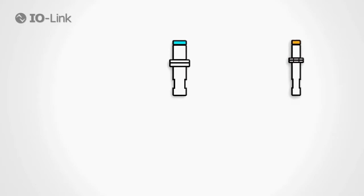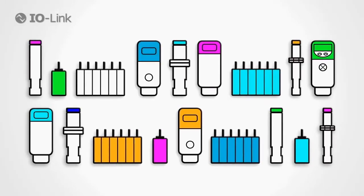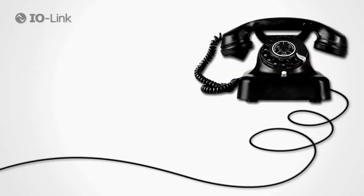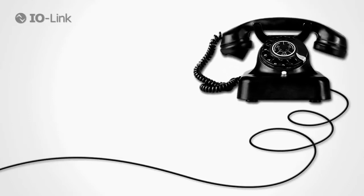You're wondering what IO-Link is, what it can do, and how you can benefit from it. Well, listen up. You work with sensors and actuators, and you're having difficulties establishing contact to both of them at the field level — no communication between the field level and the control level.